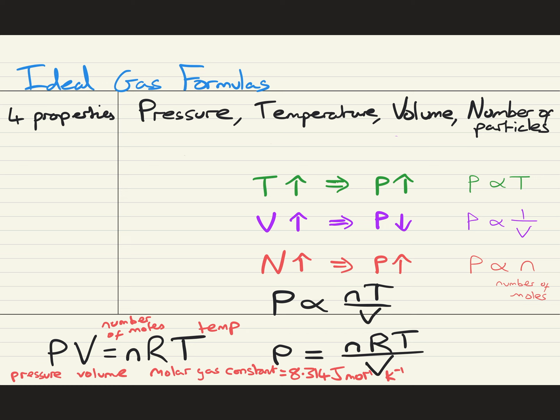One last thing though. What if we want to put in terms of the number of particles rather than the number of moles? Well, there's a simple relation using another constant, the Boltzmann constant, K. I like to remember it by K equals R over NA. So the Boltzmann constant is the molar gas constant divided by Avogadro's constant.